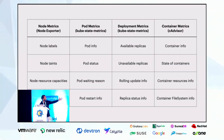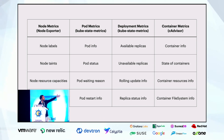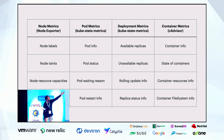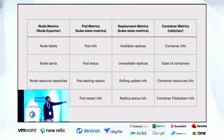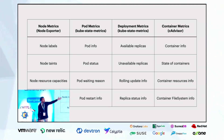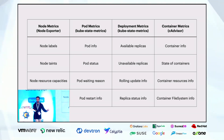Here's a table of the metrics we can generate: node exporter provides node labels, node taints, etc. Kube-state metrics provides pod info, pod status, available replicas, unavailable replicas, and more. cAdvisor provides container info, state of containers, container resource info, and so on.